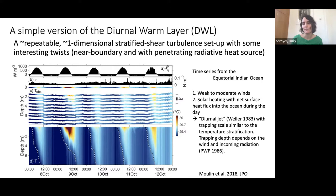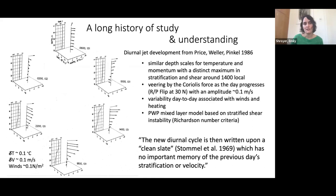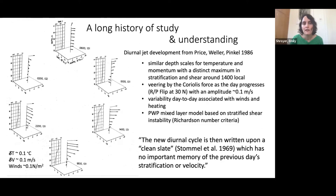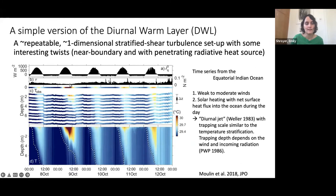I wanted to briefly touch on some background, in particular looking at the Price, Weller, and Pinkel paper from 1986, which is a classic in terms of our understanding and modeling of the diurnal warm layer. There is a question: Sri Leka asks why the warming is more enhanced on October 9th. It's the weak winds — if you look at just the subtle dip in the magnitude of the wind stress, this makes a large difference in the magnitude of the diurnal warm layer. As the talk progresses, I'll talk about when we might actually even expect to see a diurnal warm layer that's almost laminar, and you get really strong heating during those conditions.